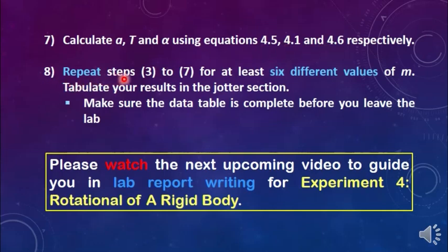Procedure 8: Repeat steps 3 to 7 for at least 6 different values of falling slotted mass M. Tabulate your results in the data section. Make sure the data table is complete before you leave the lab.